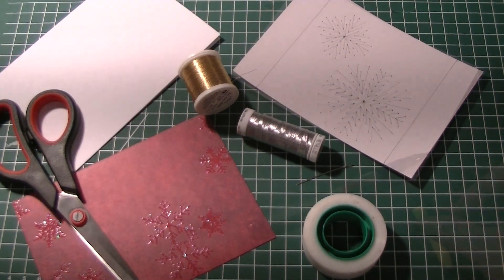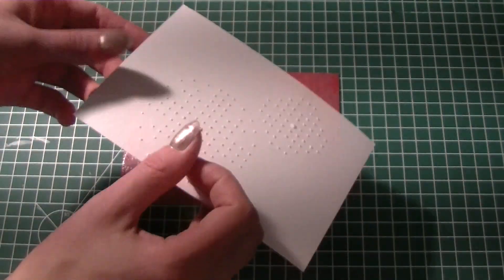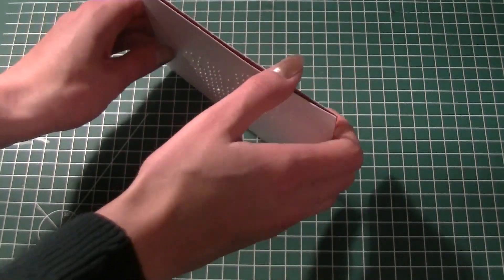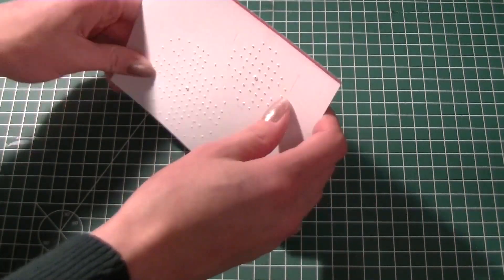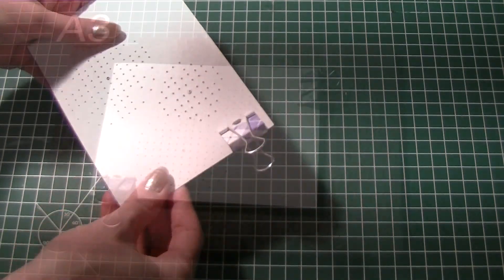Start by placing the template on the card and secure it. You can use some paper clips to make sure it doesn't move. I wanted to mirror the design so I turned the template.